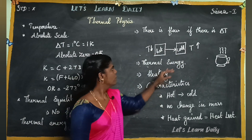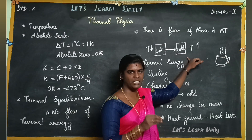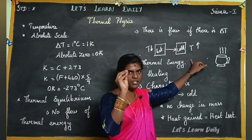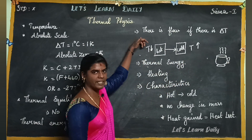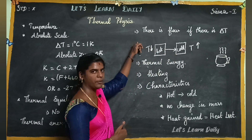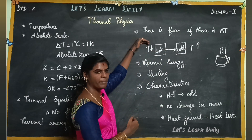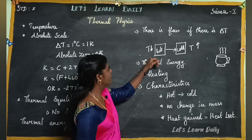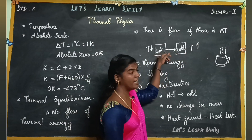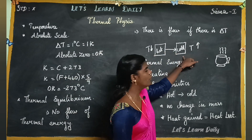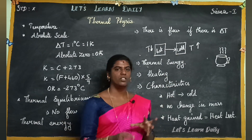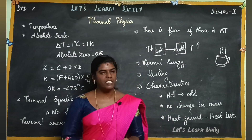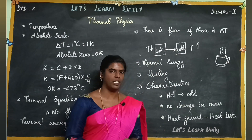If you have a hot object and a cold object, there will be a flow of heat energy from the hot object to the cold object. The cold object's temperature will increase. Thermal energy always flows from the hot object to the cold object.